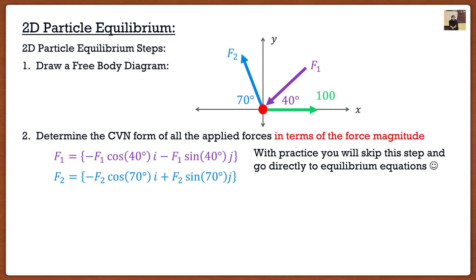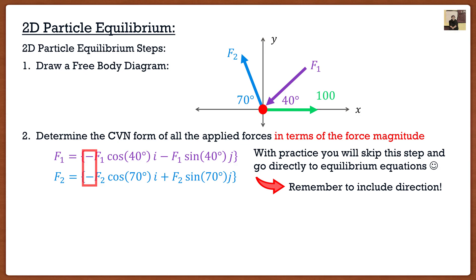You guys might say this is pretty trivial — why do I have to express them in Cartesian vector notation? And I'll let you in on a secret: you don't. If you're very comfortable finding force components — Fx, Fy, etc. — you can skip this step. The reason I'm showing it, even though it's tedious, is it'll make much more sense for the three-dimensional case. Make sure you guys include direction — for both F1 and F2 going to the left, we know those x components will have a negative sign.